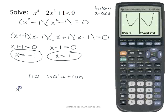So where it's below the x-axis is never. So this graph would have no solution. If I had x⁴ - 2x² + 1 ≥ 0, it would be all real numbers because it's always greater than or equal to 0.